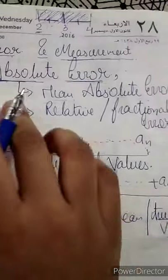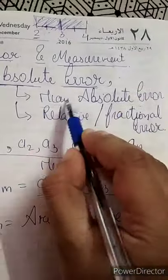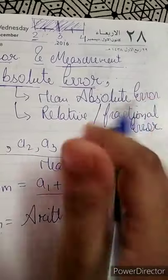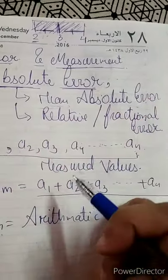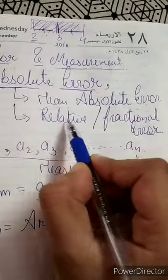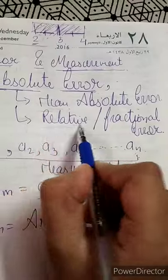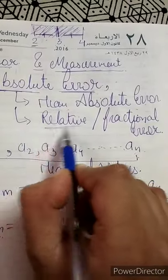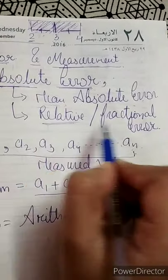In my part 1, as I told you, we discussed mean absolute error, but I forgot one more terminology — that is relative and fractional error.